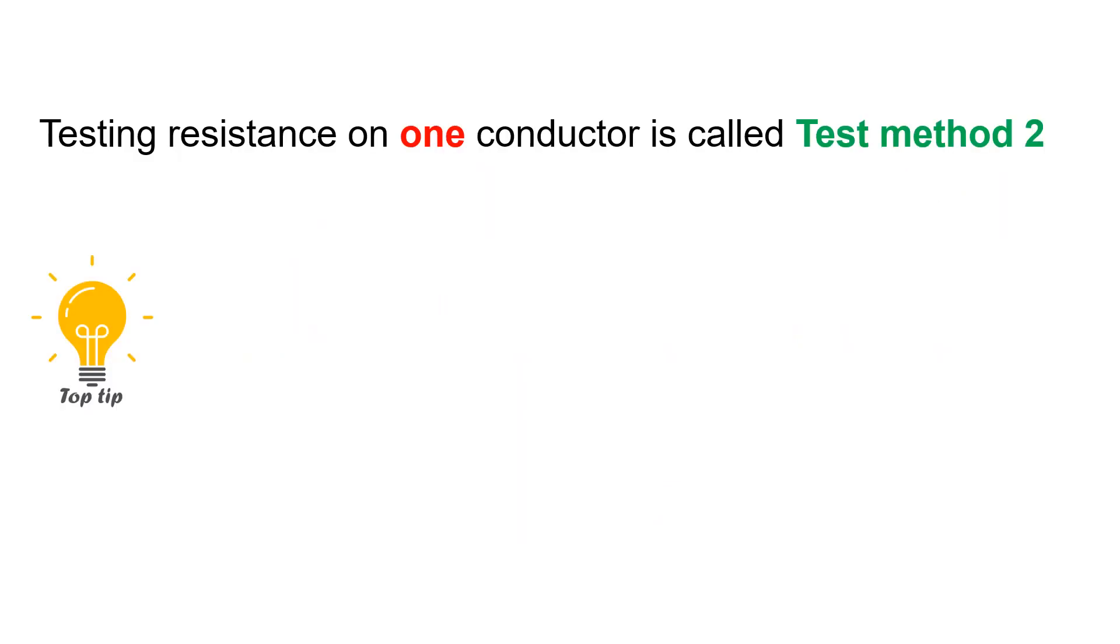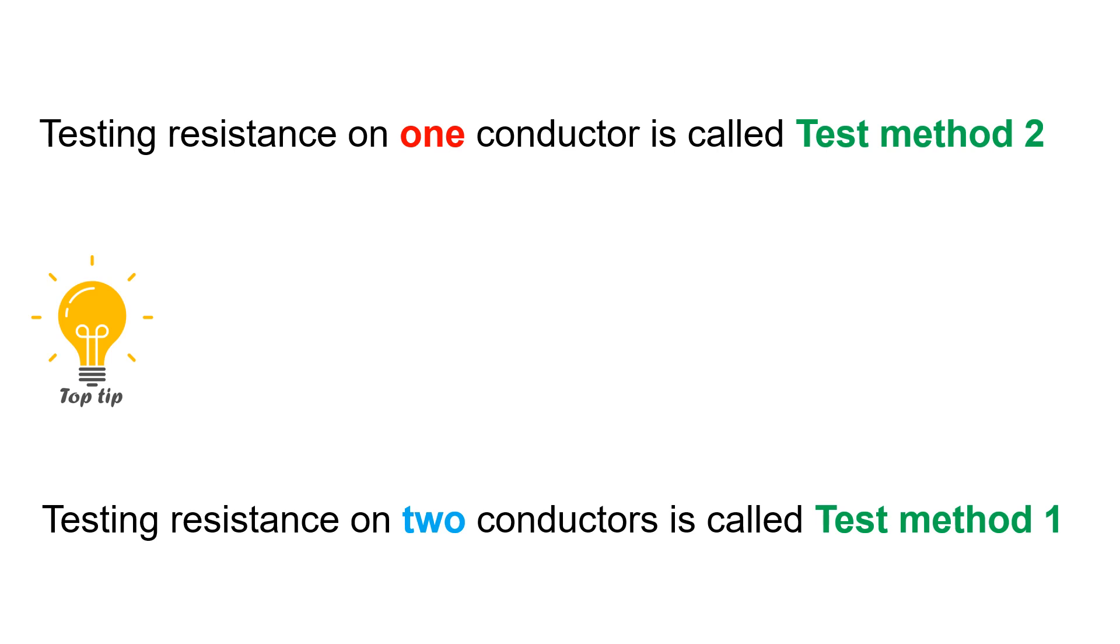Just to be clear, when you are testing one conductor like the CPC, that is called test method two. But when you are testing two conductors like your line and CPC together, that is called test method one. Pretty confusing, don't you think? Surely the IET would have identified those test methods the other way around to make it easier to remember. It would make more sense that testing one conductor would be test method one and testing two conductors would be test method two. Much easier. But for now, this is what we are stuck with, and you will have to do your best to remember that they are the opposite way around.